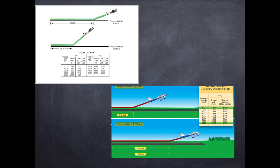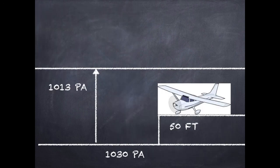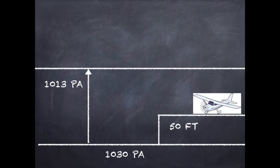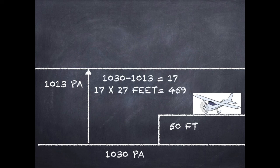Today I shall be covering with the help of an example. So let's take QNH as 1030 and elevation of the airfield as 50 feet. First of all, you need to find out the difference between 1013 and the QNH. That comes to be 17. 17 into 27 feet is 459.